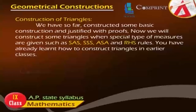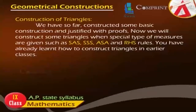Section 4: Construction of Triangles. We have so far constructed some basic processes and justified them with proofs. Now we will construct some triangles when special types of measures are given, such as SAS, SSS, ASA, and RHS rules. You have already learned how to construct triangles in earlier classes.